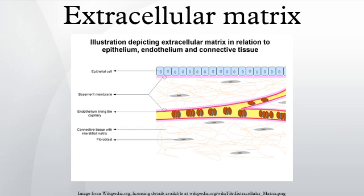Molecular components: components of the ECM are produced intracellularly by resident cells and secreted into the ECM via exocytosis. Once secreted, they then aggregate with the existing matrix. The ECM is composed of an interlocking mesh of fibrous proteins and glycosaminoglycans.